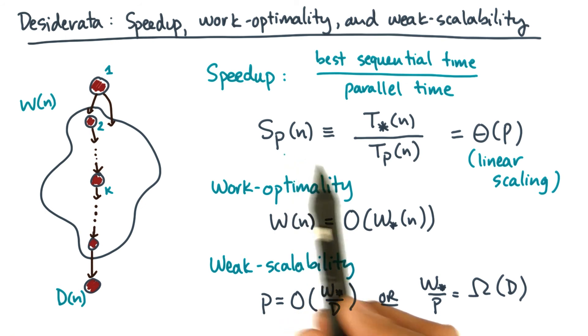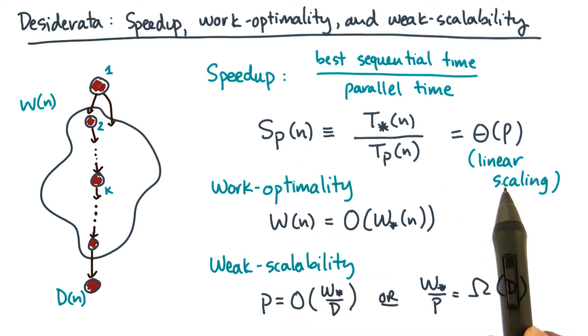So starting from speedup, we set linear scaling as our goal. Now to achieve linear scaling, you derived two fundamental principles of good parallel algorithm design. The first is work optimality, which says that the work of the parallel algorithm should match the work of the best sequential algorithm. And the second principle is weak scalability. In one interpretation, it basically says that the work per processor should grow as a function of n, and that function is determined by the span.